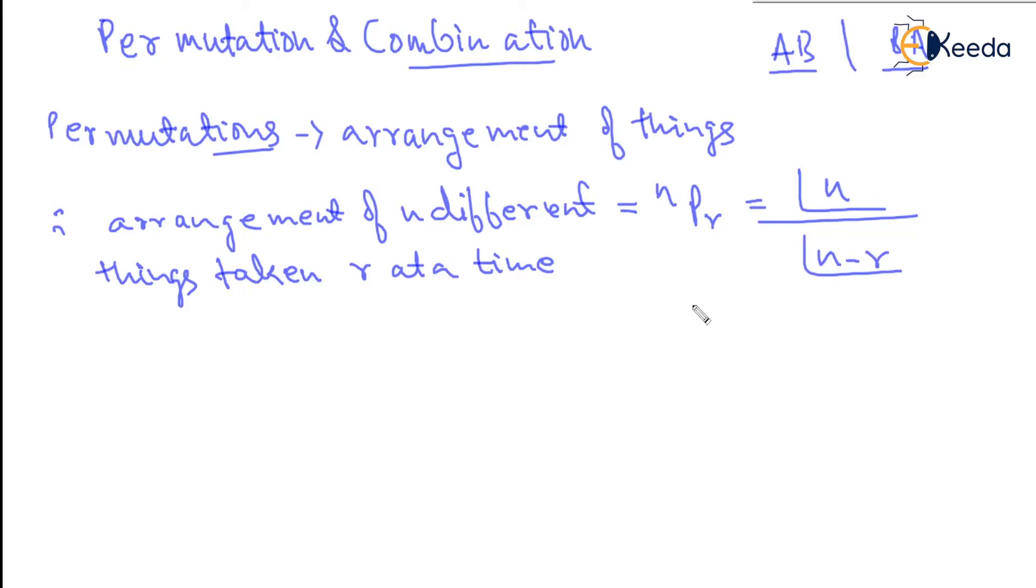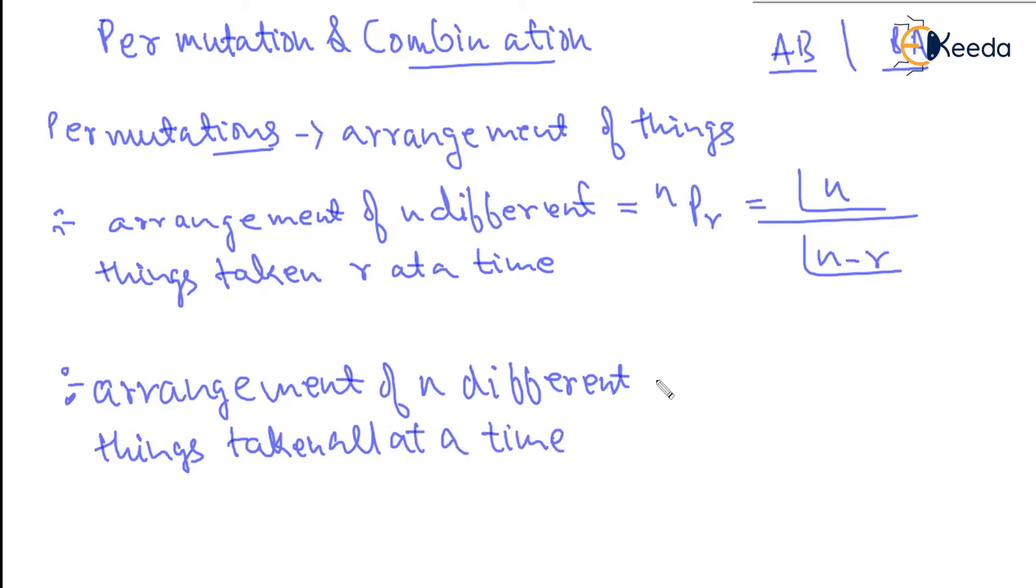Again, arrangement of n different things taken all at a time is nPn, which is directly factorial n.